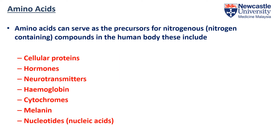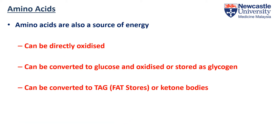Amino acids can be used to make nitrogenous compounds such as proteins, hormones, neurotransmitters, hemoglobin, melanin, nucleotides, and so on. Without amino acids, we can't make all these compounds, which are essential to life. Amino acids are also a source of energy, especially during starvation, because their carbon skeleton can be directly oxidized.